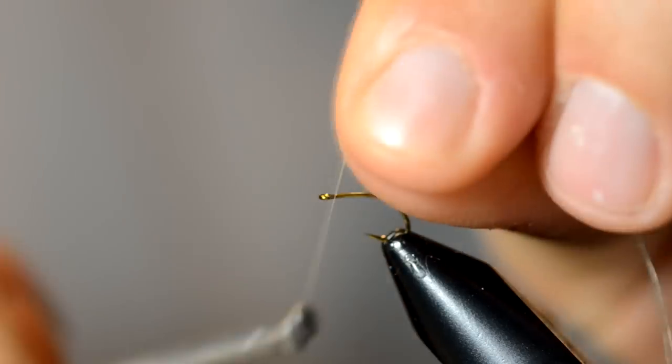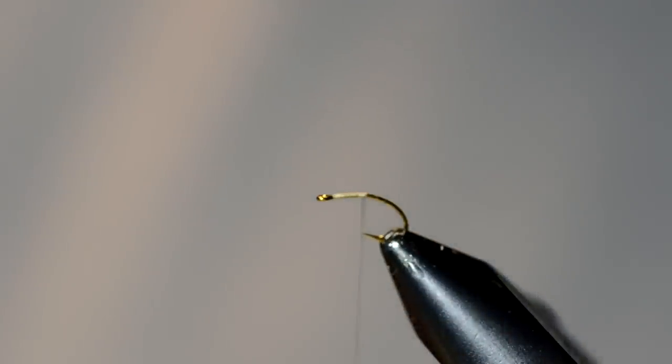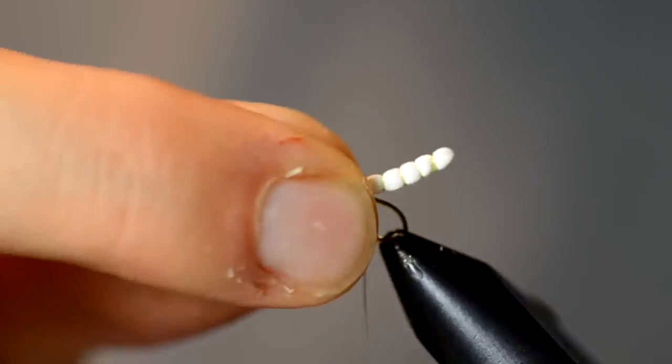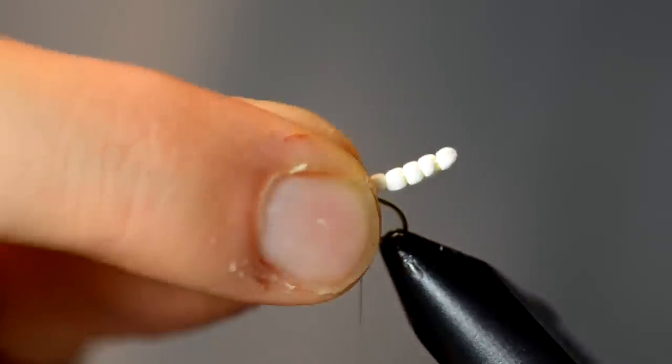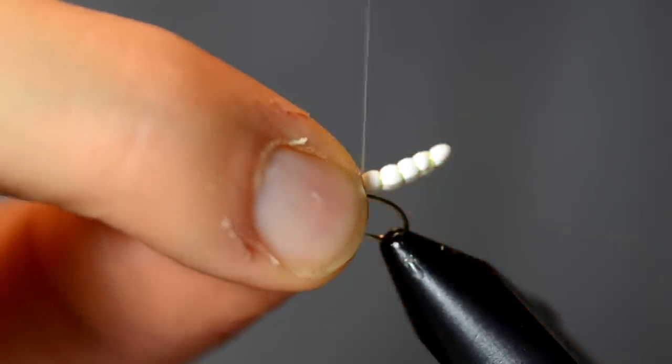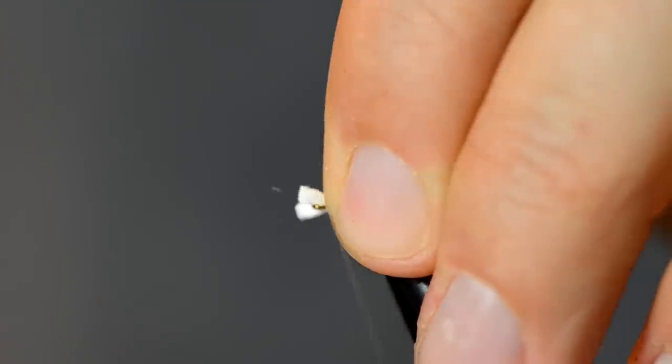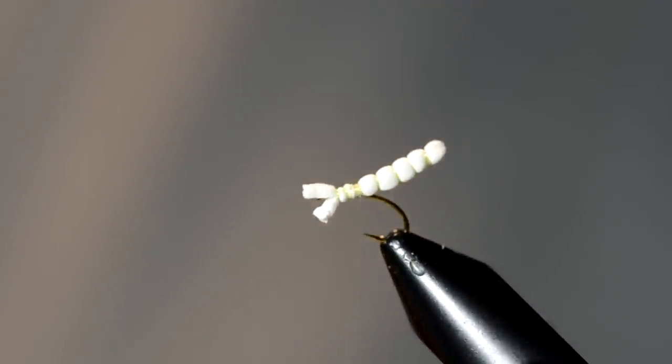I'm going to go ahead and start the thread on the hook. With my thread on there, I'm going to set my extended body down right at that last segment point. You have to eyeball this depending on the size of the hook and the size of the bug you're trying to imitate. I'm going to tie in right there on that last segment, and then I usually like to tie forward over the foam and then clean up the foam.